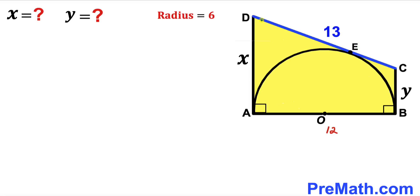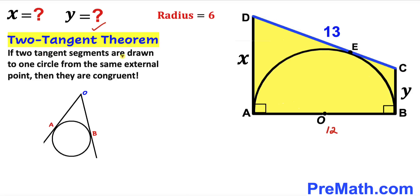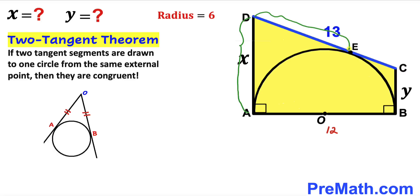Line CD has been divided into two parts: DE and EC. Recall the two tangent theorem: if two tangent segments are drawn to one circle from the same external point, then they are congruent. Applying this theorem, tangent AD equals segment DE, so if AD is X then DE is X as well. Likewise, side BC equals segment EC, so if BC is Y then EC is Y as well.